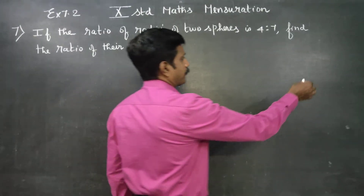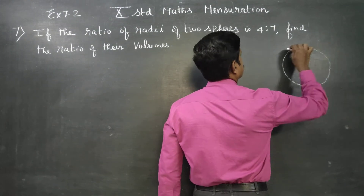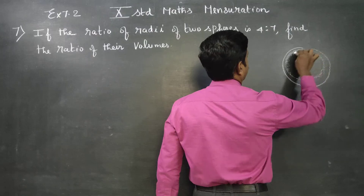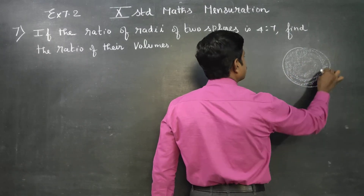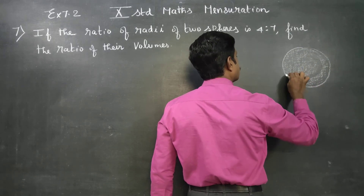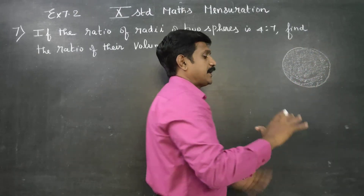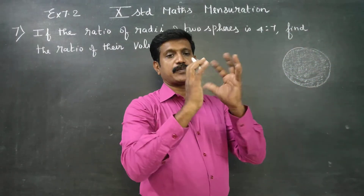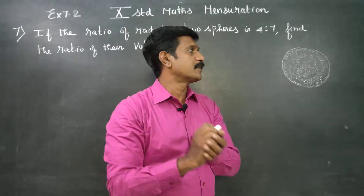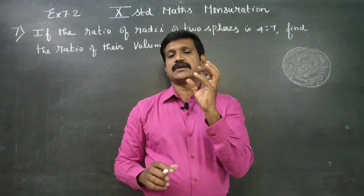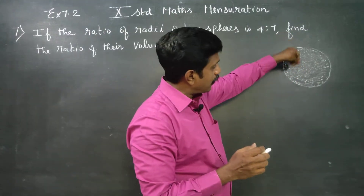First of all, a sphere is a three-dimensional figure — like a cricket ball or a football. It is a three-dimensional solid shape. A rubber ball is a solid — its volume is full throughout.